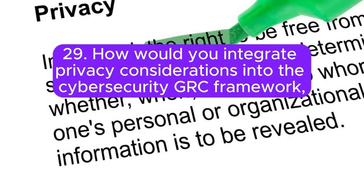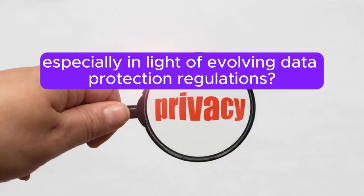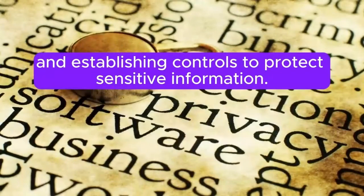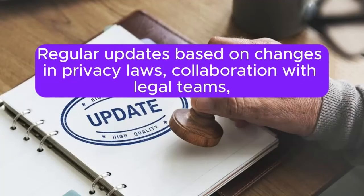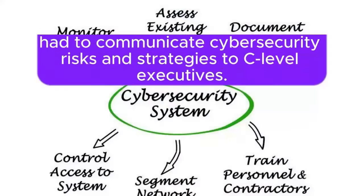Question 29: How would you integrate privacy considerations into the cybersecurity GRC framework, especially in light of evolving data protection regulations? Answer: Integrating privacy involves aligning GRC processes with data protection regulations, conducting privacy impact assessments, and establishing controls to protect sensitive information. Regular updates based on changes in privacy laws, collaboration with legal teams, and user education on privacy principles contribute to an integrated cybersecurity GRC approach.